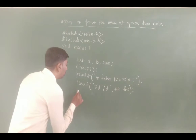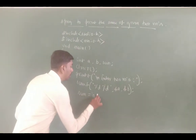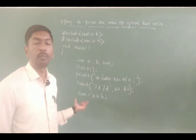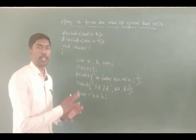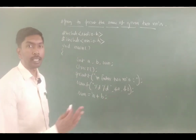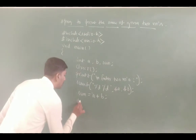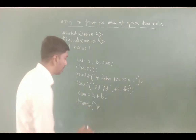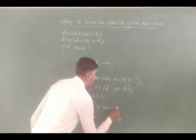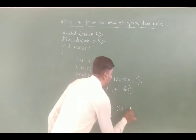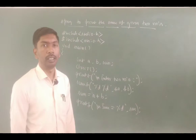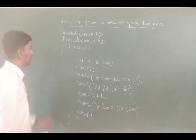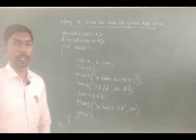After that, we calculate: sum = a + b. Then printf "\nsum is equal to %d", sum. After that, put getch(). Then close the flower brace — open and close. This is the simple program.